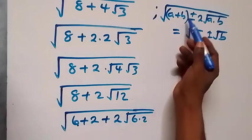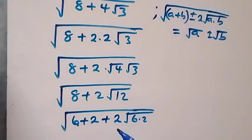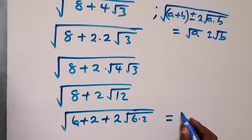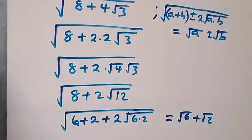Now when we compare this with this format we have here, taking 6 as a and 2 as b from here, we discover that the result here will simply be equals to root 6 plus root 2.